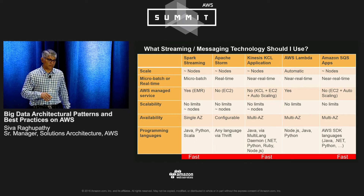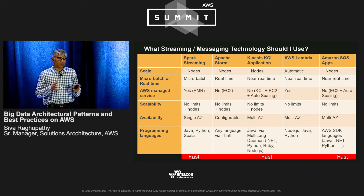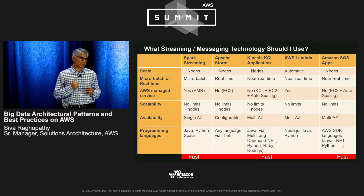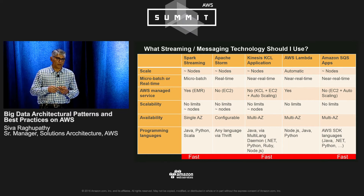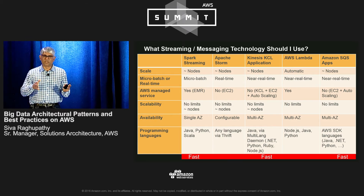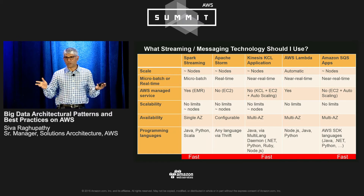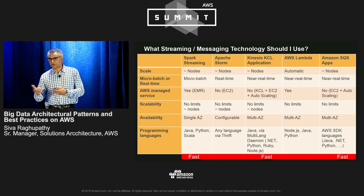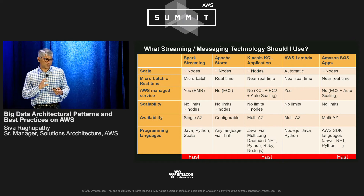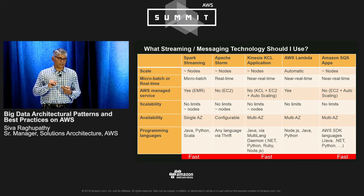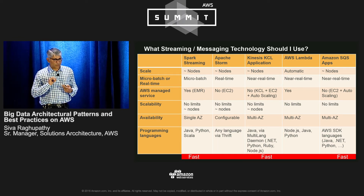I've also done a comparison of stream processing technologies across attributes such as scale, whether it's micro-batch or real-time, whether it's a managed service, scalability limits, and availability. On availability: Spark Streaming running on top of Elastic MapReduce is still a single-AZ solution, while AWS Lambda automatically runs in multiple availability zones. So if you're using Spark Streaming on EMR for stream processing and are worried about availability, you need a mechanism to run another cluster in case an availability zone fails. Most customers think about this after the fact — I wanted to highlight it here.